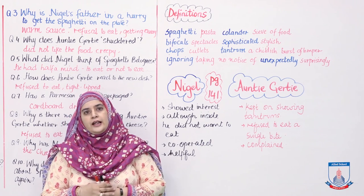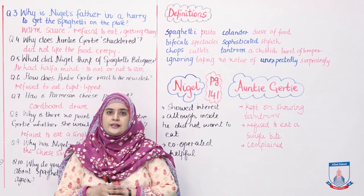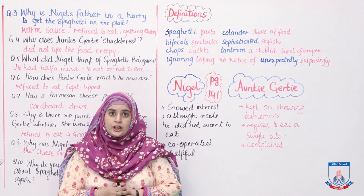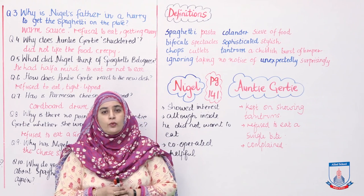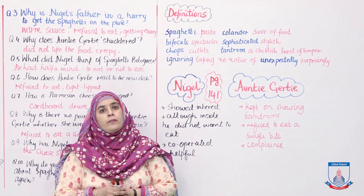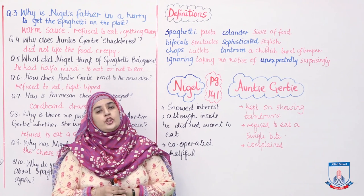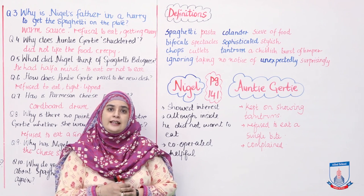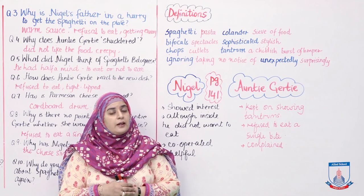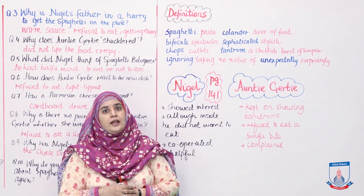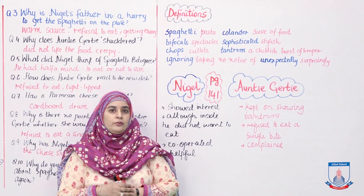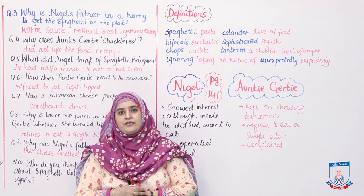Quick recap karli. Aaj humne Oxford Progressive Reader ka unit 6, The Food, kiya. Comprehension ko samjha, word translation ki, question answers ki, vocabulary meaning ki, aur ek open ended question kiya jis mein aapne Auntie Jerty aur Nigel Slater ki characters ko compare and contrast karna tha. Yeh sab kaam aap apni copy mein karenge. Joining us in the next lesson. Allah hafiz.